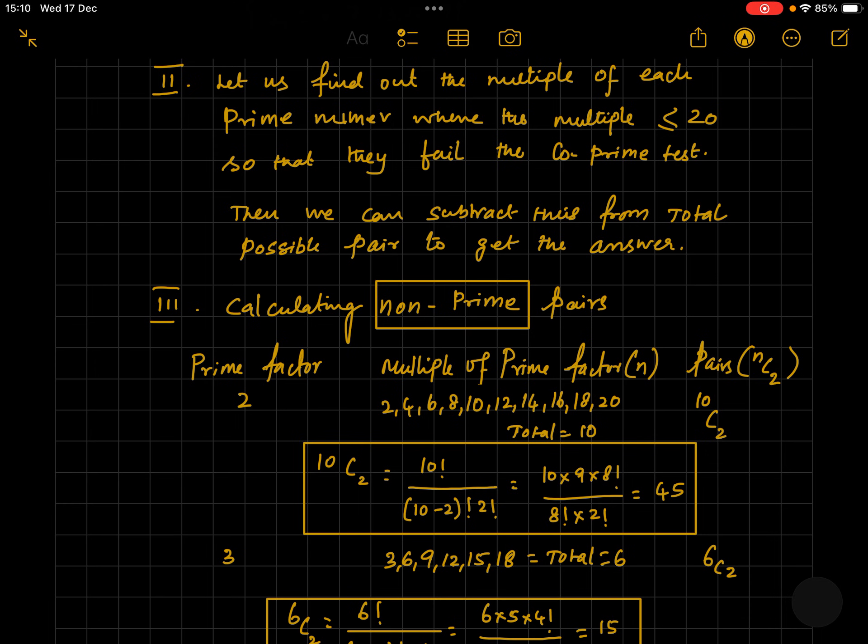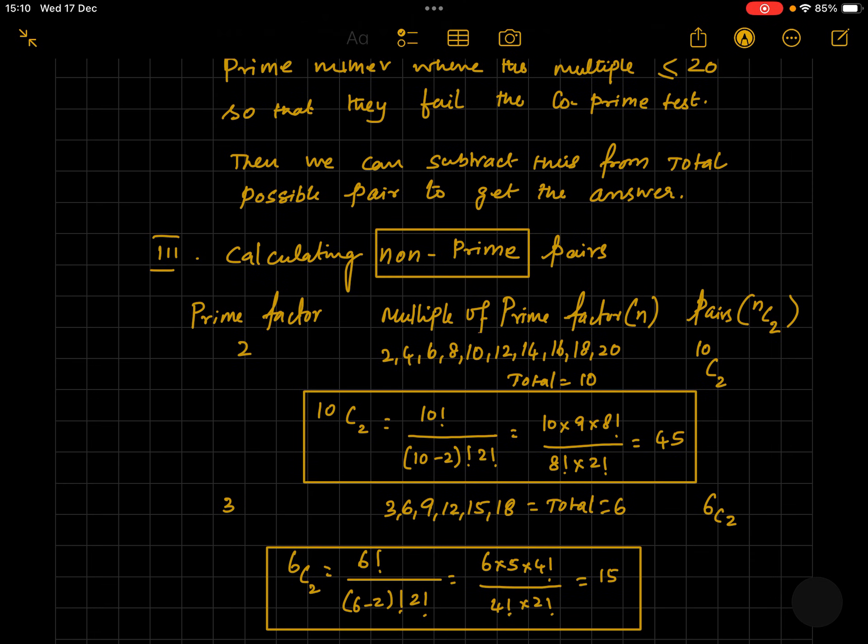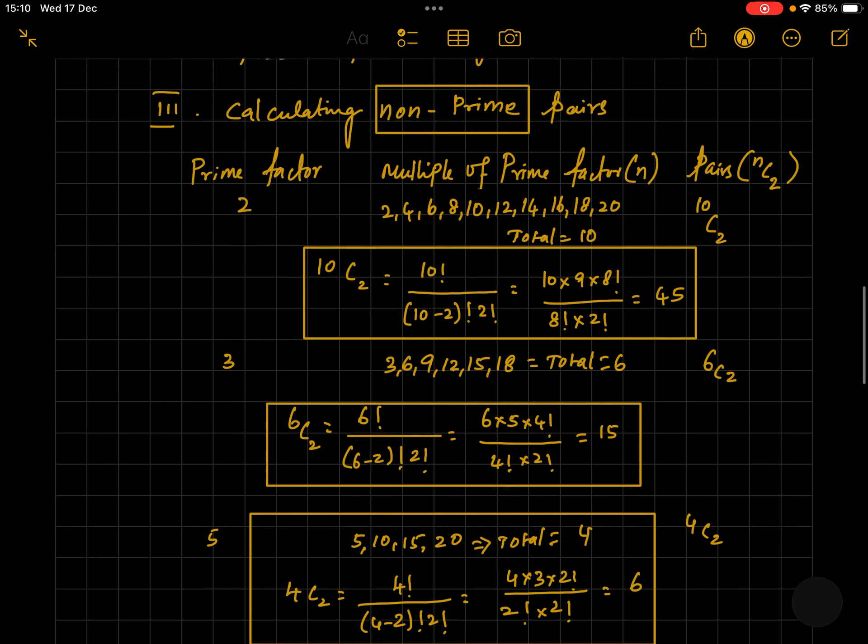So there are a total of 10 numbers. In 10C2 ways, we can get the number of pairs which are multiples of 2 and which are not co-prime. So we get 45 such pairs.